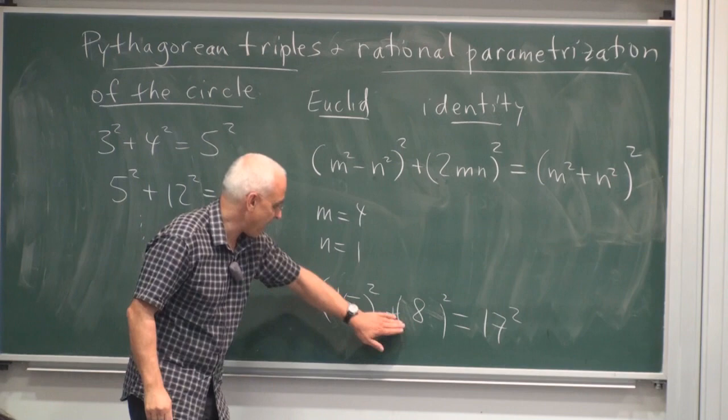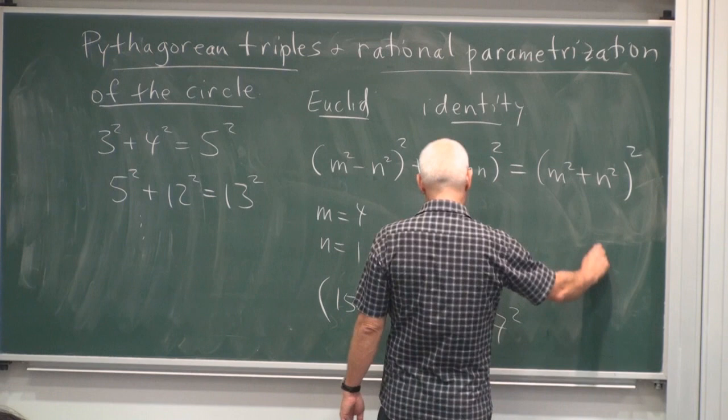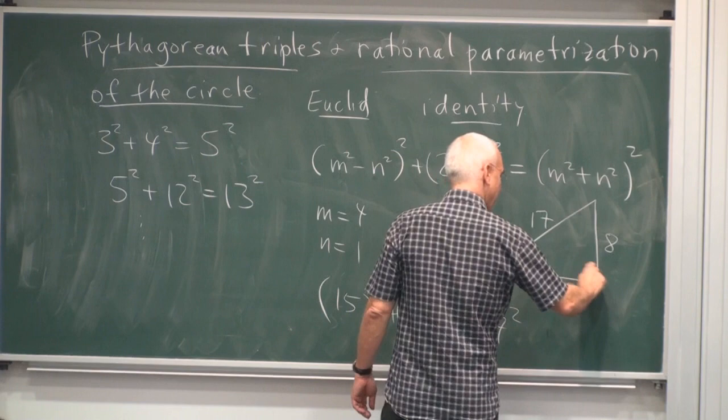So 15² + 8² = 17². That means that there is a triangle whose sides are 15, 8, and 17. And that's a right triangle.